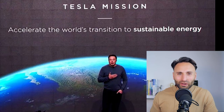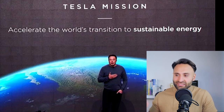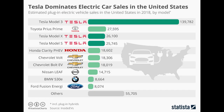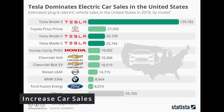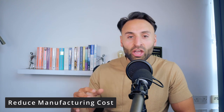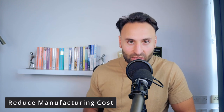For example, with a company like Tesla, their vision is to accelerate the world's transition towards renewable energy. But underneath that they also have their mission and goals — for example, to increase the number of sales for their vehicles and to reduce the manufacturing cost of their cars in order to make the product have more mass appeal.